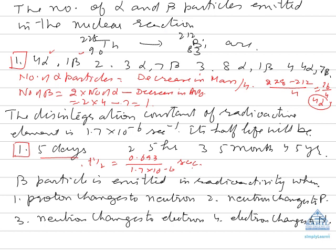Now the other question: Beta particle is emitted in radioactivity when? When a proton changes to neutron? Neutron changes to proton? Neutron changes to electron? Dear students, beta particle is nothing but an electron. So when a neutron changes to proton plus electron, the neutron will change into a proton, atomic number will increase, and electron will be emitted as beta particle.